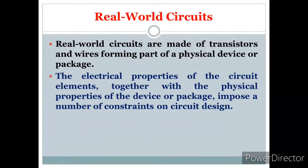Real world circuits are made up of transistors and wires forming part of a physical device or package. As seen in analog electronics labs, transistors, wires, resistors, and capacitors are used to perform operations like amplification, clipping, and clamping. The electrical and physical properties of circuit elements impose certain constraints on the design, so the designer must consider what components to choose, what restrictions apply, and what constraints the device imposes during the design process.